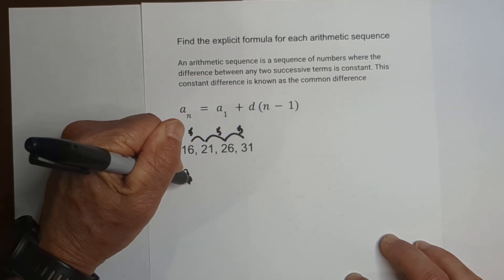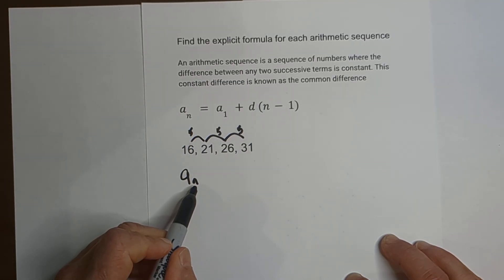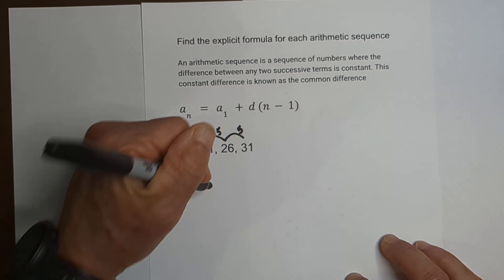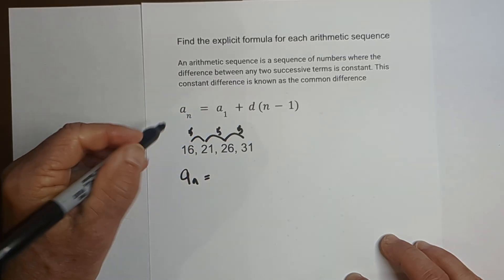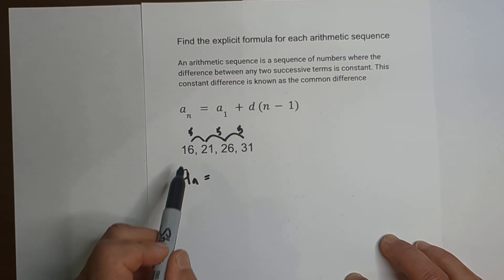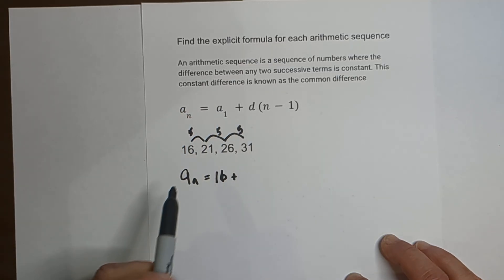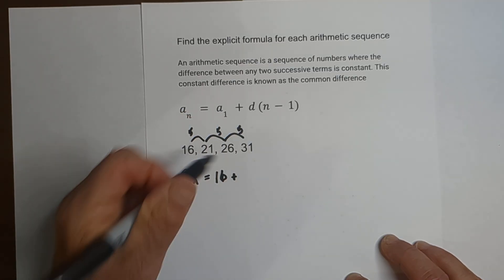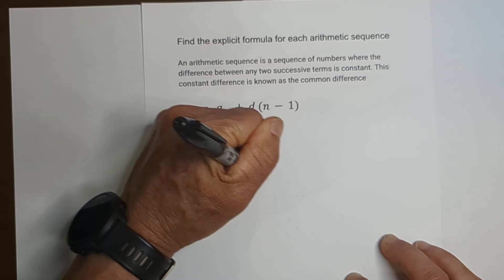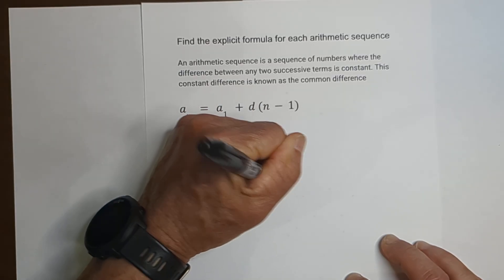a_n - the n would be the number of the term you want. So say you want the 50th term, that would be 50. And then a_1 is your very first term. In this example it's 16, plus d is the common difference which is 5, and then you have n minus 1.